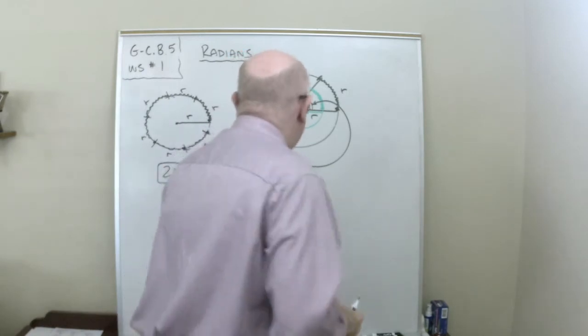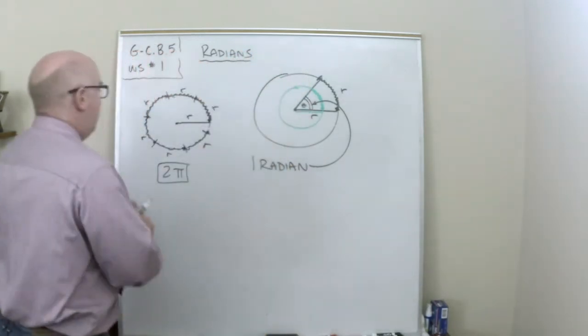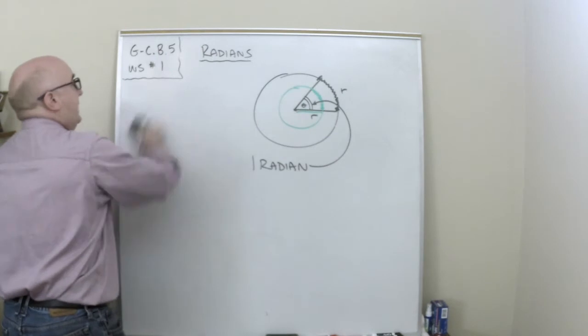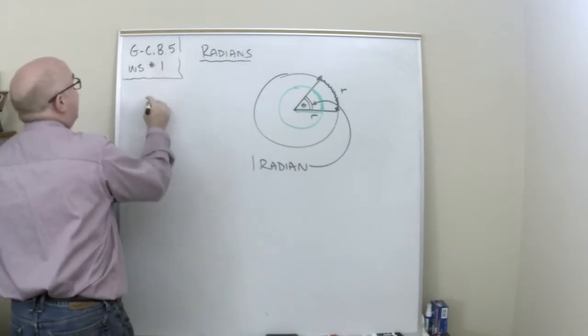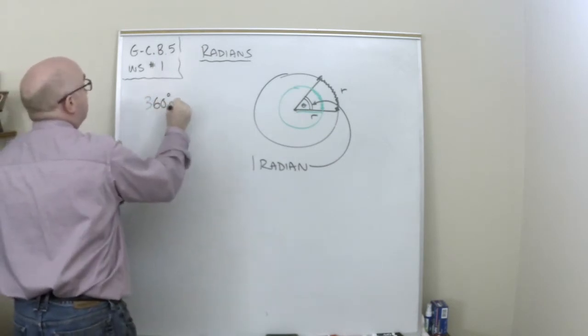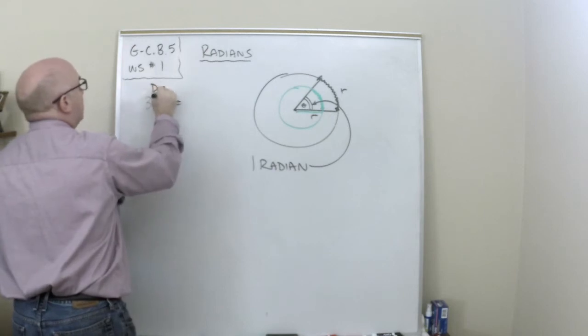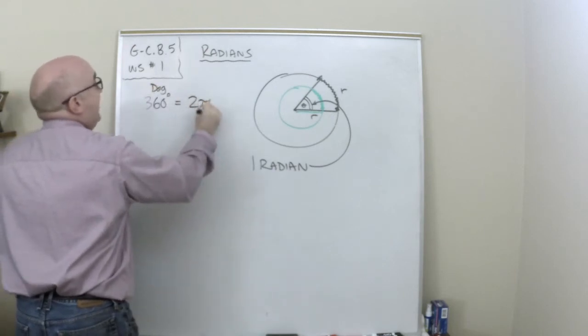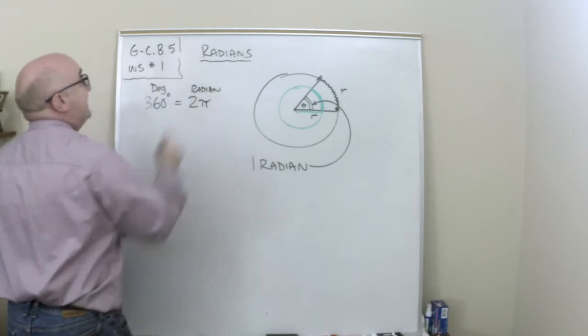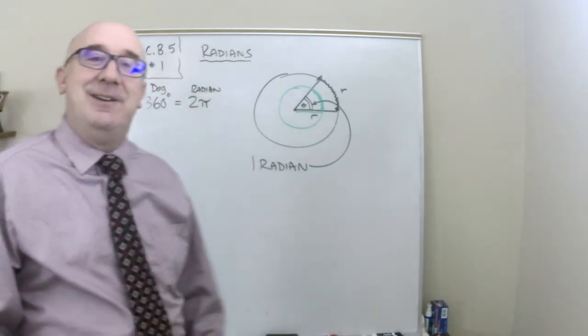Now a radian, because it's constant. Now we know that in a circle there's 360 degrees. This is degrees. Now we know, radian-wise, there are two pi radians in one full circle. Right?